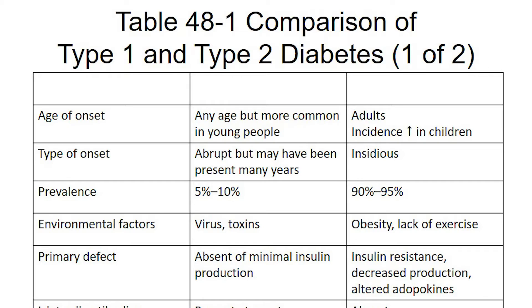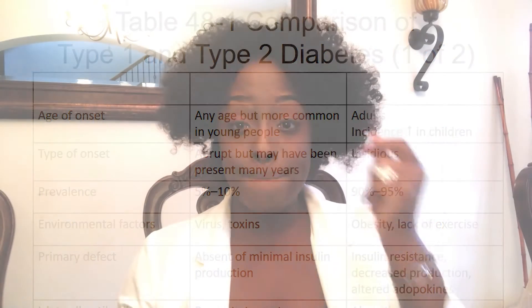With Type 1, the patient will start to exhibit signs and symptoms of hyperglycemia very quickly. The reason is that Type 1 patients either aren't producing any insulin at all, or the amount they're producing is so small it's not enough to get sugar out of the bloodstream and into the cells. You'll see symptoms such as polyphagia, polydipsia, and polyuria.